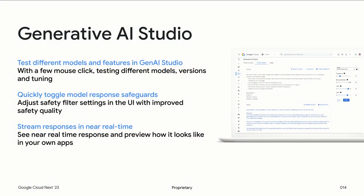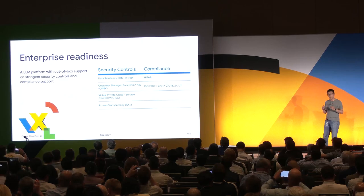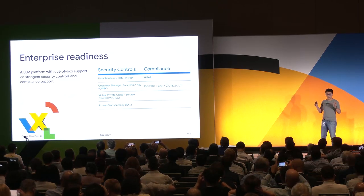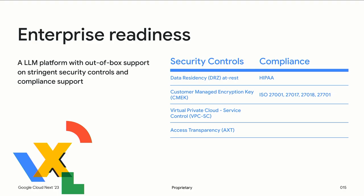Generative Studio has been the testing ground for a lot of you to experiment and evaluate our models. Now we're making it even easier to prototype across the entire model lineup with all the new parameters. All the changes we talked about today are already live. Today we're also announcing the Palm API supports additional security features such as data residency at REST, virtual private cloud service control, and customer encryption keys. With these enterprise readiness features, we want you to feel 100% confident that you can run the most critical business workloads on Palm API and Vertex AI.